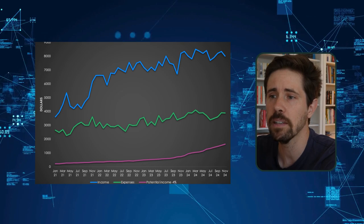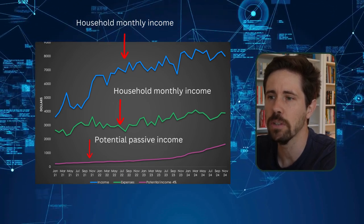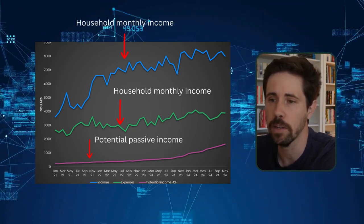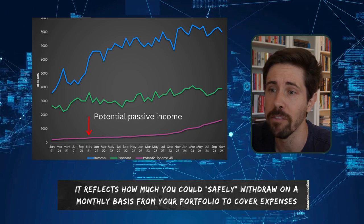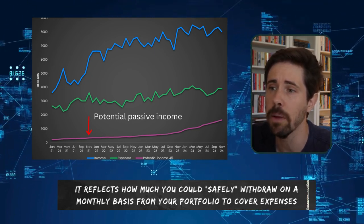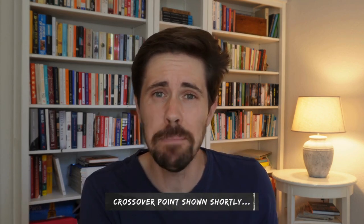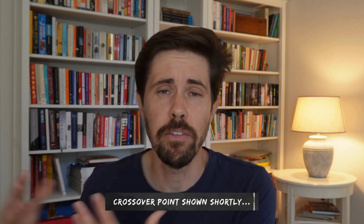Here we can see a theoretical case study with the monthly household income depicted in blue, the expenses in green, and the potential income that could be sustainably generated by their investments in purple. That third purple line represents potential income because we're not touching anything from our investments — the purple line is just keeping track of how much you could theoretically withdraw from your investments in a sustainable manner to cover your monthly expenses without fear of depleting your portfolio.